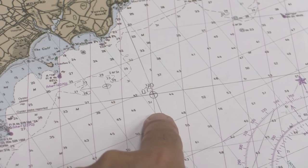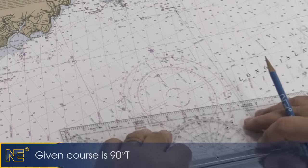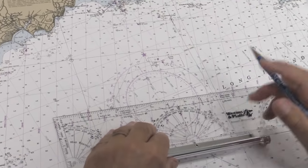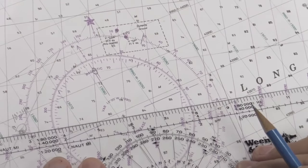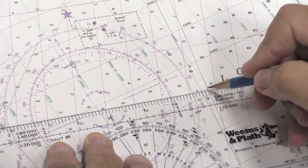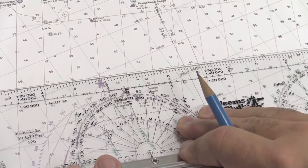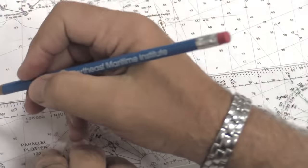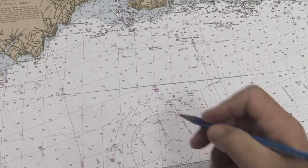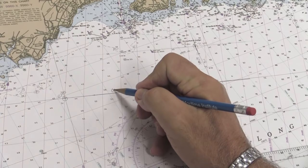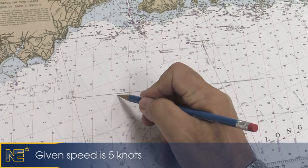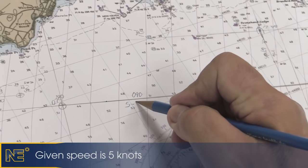Our given course is 90 degrees true. So we go to the compass rose, we find 90 degrees true on the outside part of the rose, and we will create a straight line parallel up, 90 degrees true, and we'll draw our line and label that 090 degrees. The speed given for the problem is 5 knots.